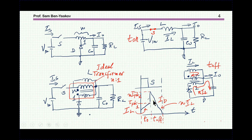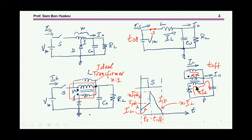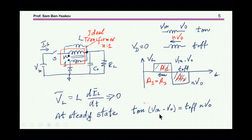Looking at the currents during the switch-on time, we see regular buck behavior. However, during the off time, the current through the diode and to the output will be much larger — actually N times the inductor current. If this is the peak during the transition, we get N times this peak, and then there is a drop. The slope here corresponds to a lower inductance — the reflected inductance to the secondary.